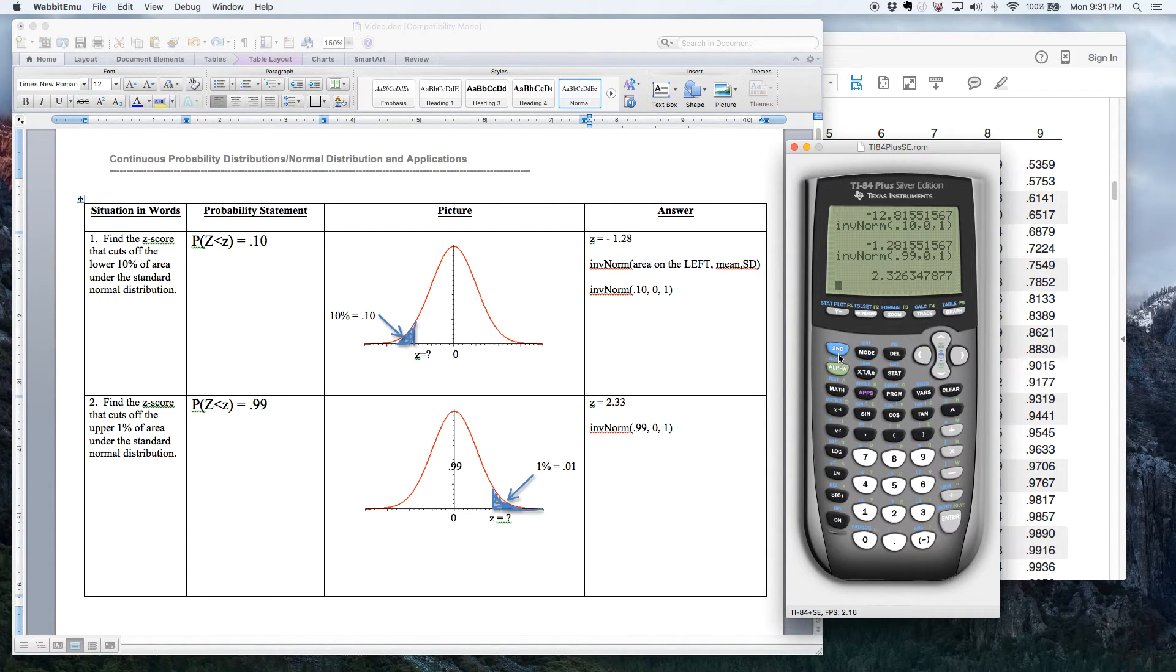One thing I do want to point out, and this is true for both normal CDF and inverse norm, when the mean and standard deviation are 0 and 1, you actually don't have to type them. So notice what happens if I say inv norm of 0.99. Notice it's the same answer. I didn't type the 0 and 1. So if you leave the 0 and 1 out for inverse normal, it automatically assumes you want 0 and 1, which is kind of nice to say as typing. By the way, it does that for normal CDF too. If you leave out the 0 and 1, it automatically assumes them. If you have the new version of the calculator, I believe it automatically puts 0 and 1 in there, and you have to change it if you want to.